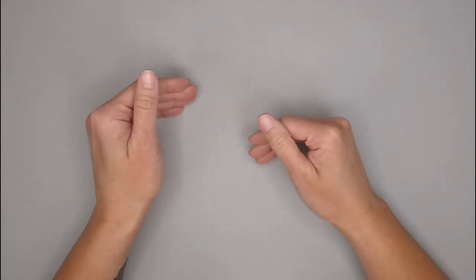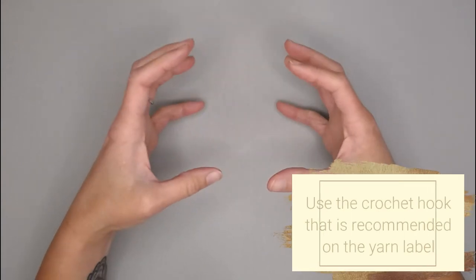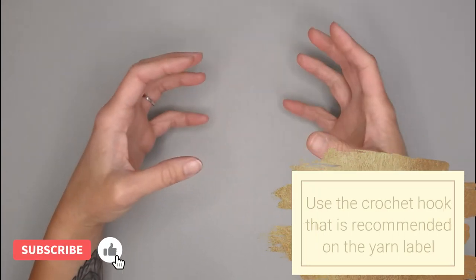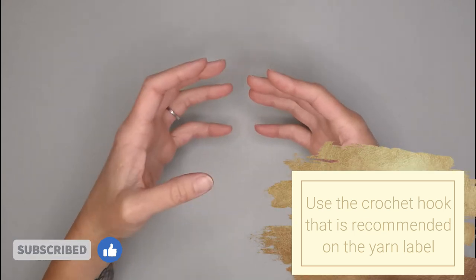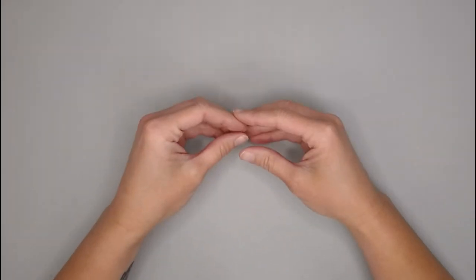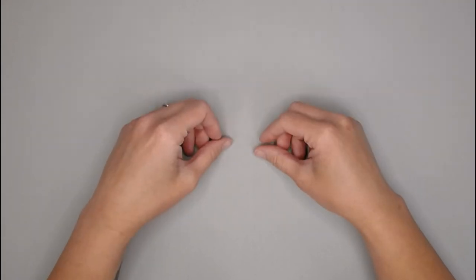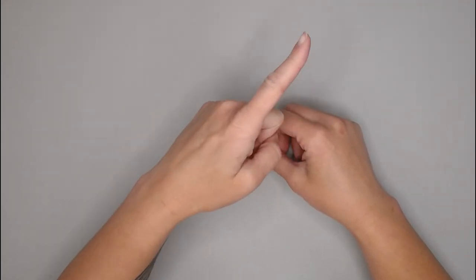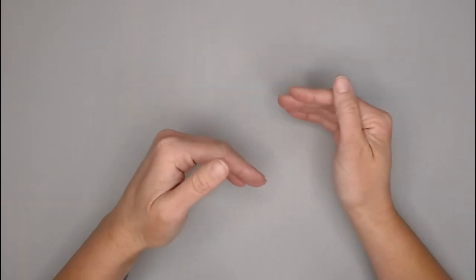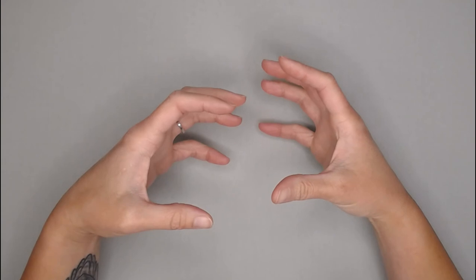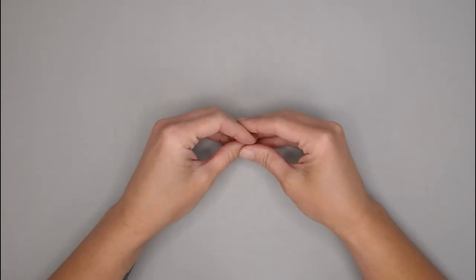The crochet hook that you will need is just whatever crochet hook is recommended on the yarn label itself. If you don't have a yarn label or you would still like to look into how to figure out what crochet hook to use with your yarn, I actually just made a video. I will put a link right here at the top of the screen. Click on that link. Watch the quick video on which crochet hook pairs best with which size yarn and that will set you up for success.